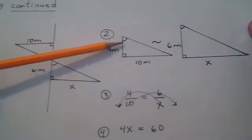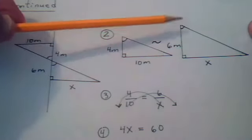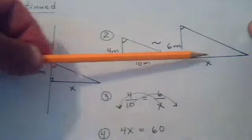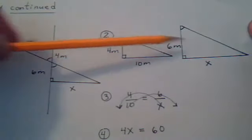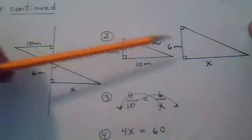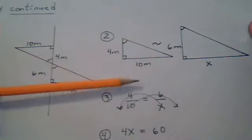So notice this side is proportional to this side. This side is proportional to this side. This side is proportional to this side. Now that we know which side matches which side, we set up a proportion.